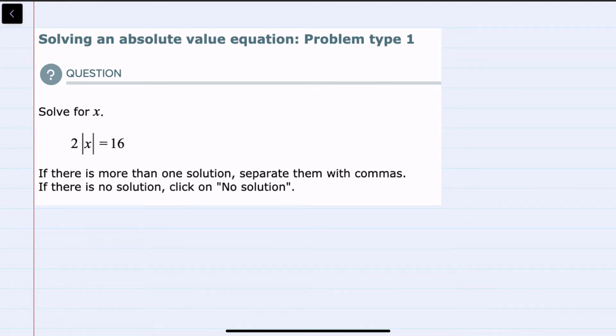We're asked to solve this equation for x, and to do so we're going to want to isolate the x on one side of the equation. Our first step in that process is going to be to get the absolute value of x by itself.